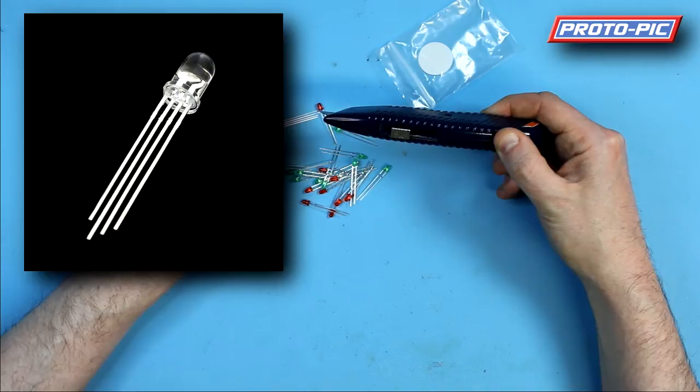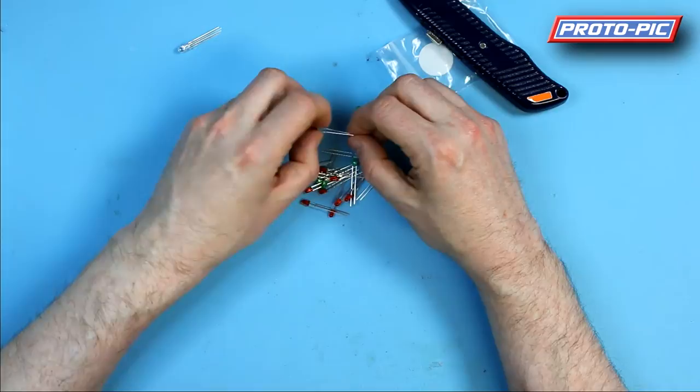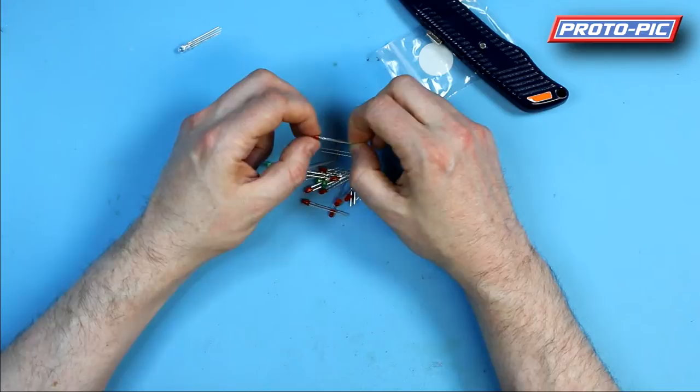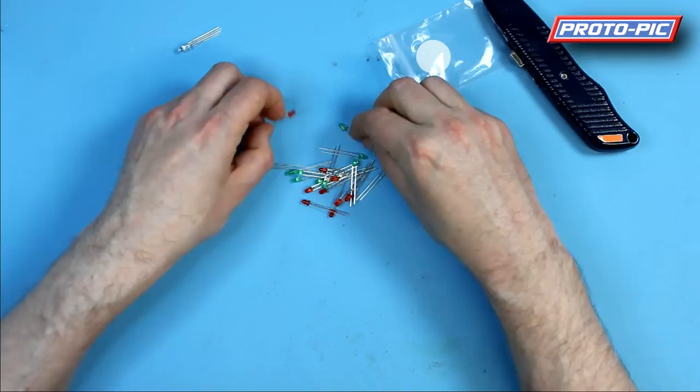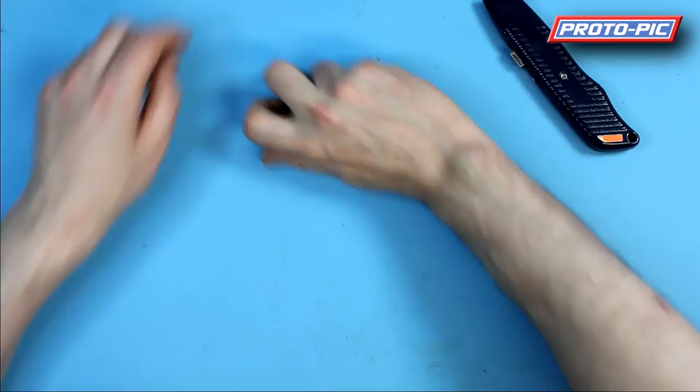Now hopefully you can just see that the legs there are different lengths, and the longest leg on this RGB LED, the white one, is the cathode. The longest leg on the red and green LEDs is actually the anode. You can see on the red and green LEDs that they've got a flat on one side of the LED. The flat is indicating the shortest leg, and that flat indicates the cathode. So you get 10 red, 10 green, and one RGB LED.